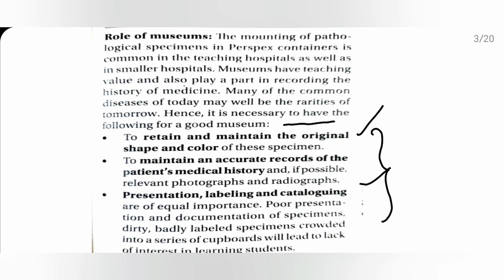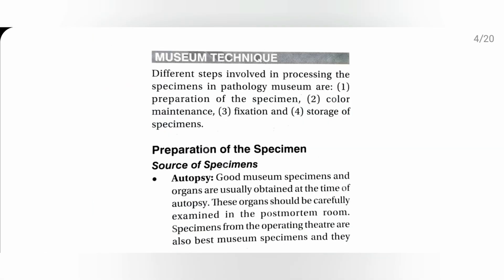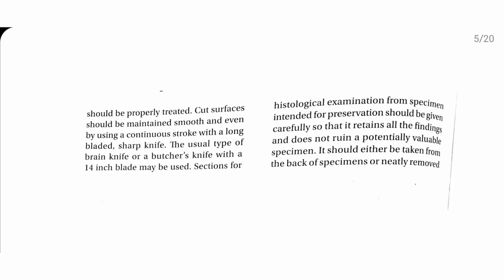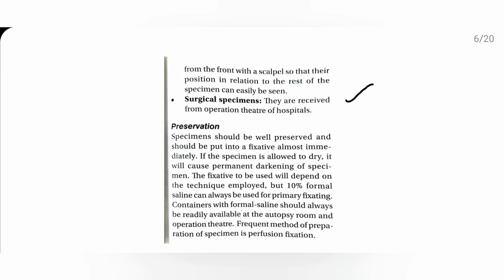This is a specimen of carcinoma of the stomach, which is grossly hinged. It is necessary to describe it properly, and proper photographs are required. This is how a good museum should be, and these steps are required to prepare a specimen.